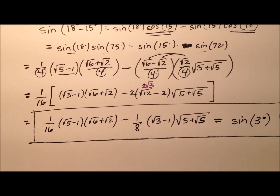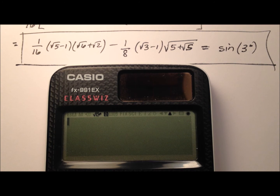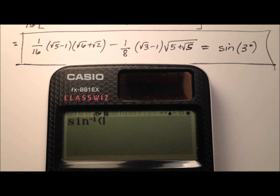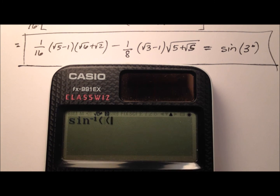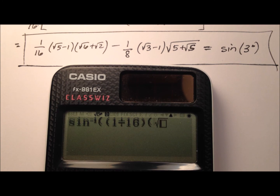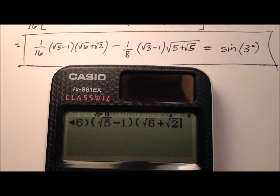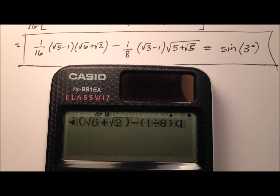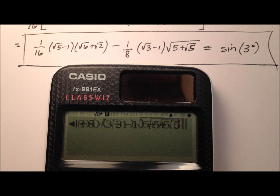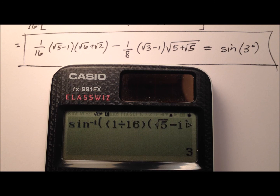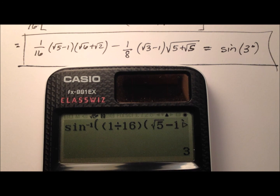Let's grab a calculator and verify that this is indeed what we get. So we're going to take the inverse sine and put this ratio in. It's 1/16 times (√5 minus 1), multiplied by (√6 plus √2), minus 1/8 times (√3 minus 1) times (√5 plus radical 5). Closing all the parentheses, we get 3 degrees — so we see that that ratio works, confirming the exact value for the sine of 3 degrees.